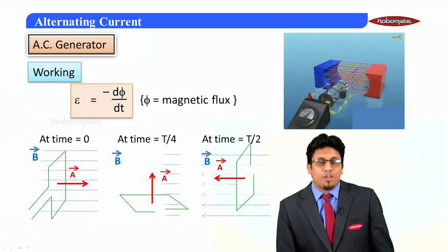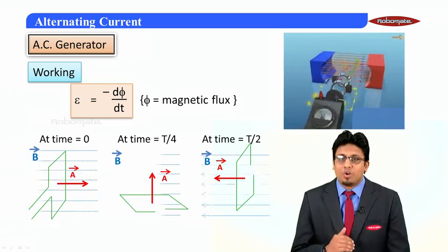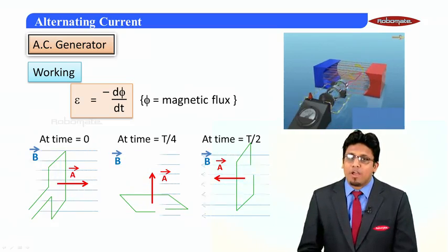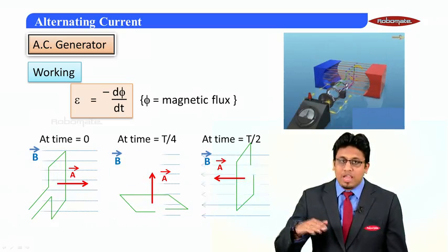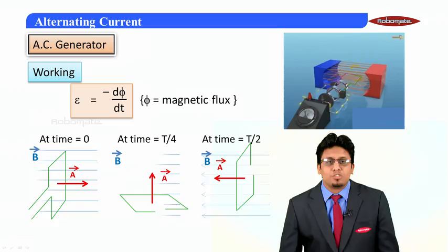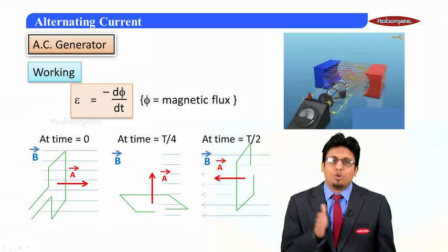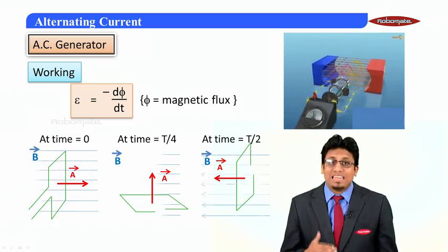Now, if we note from t = 0, the flux was negative. At t = T/4, it becomes zero, and at T/2, it becomes positive. Therefore, the flux from t = 0 to t = T/2 increases.